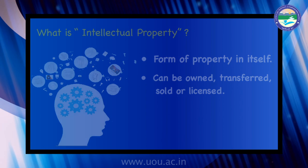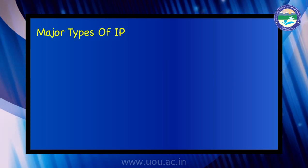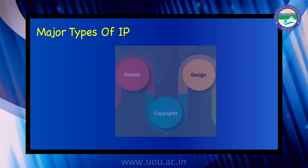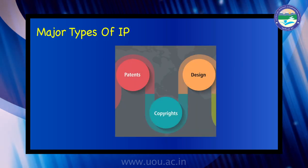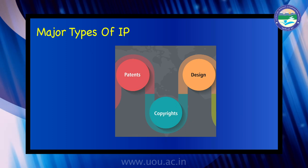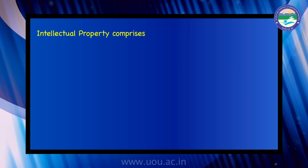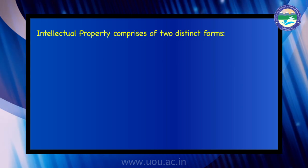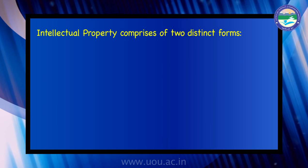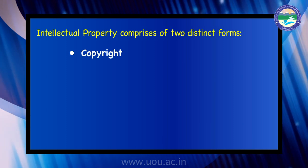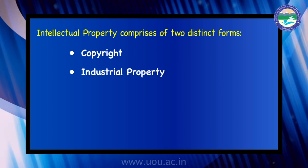This course will explore several different types of intellectual property — namely copyright, industrial design, and patents. For the purpose of identifying two distinct types, it is easier to consider them as either copyright-related on one hand, or industrial property on the other.